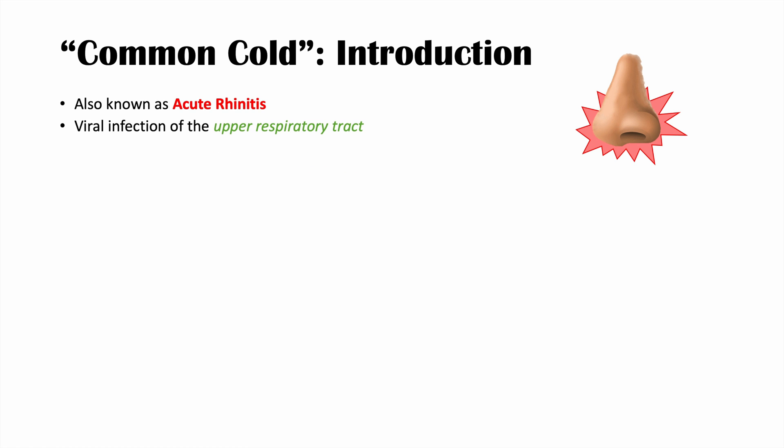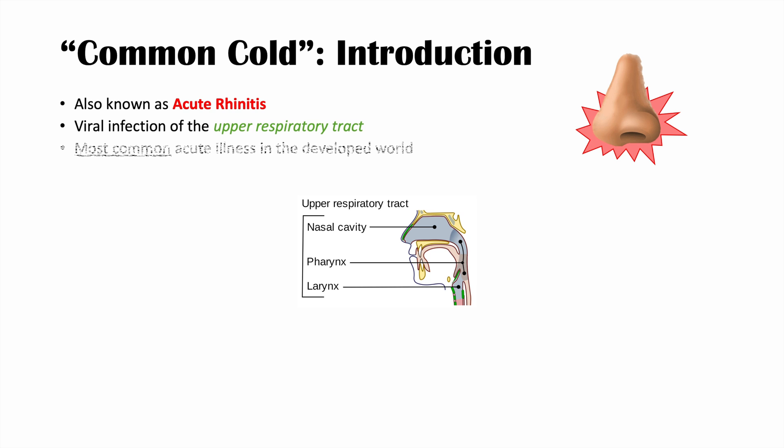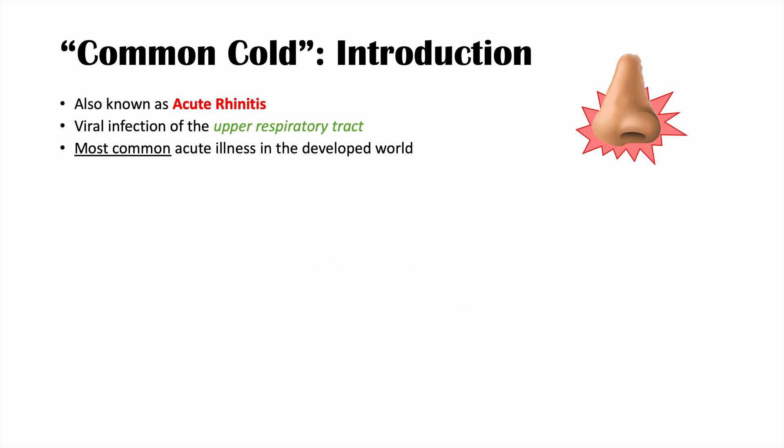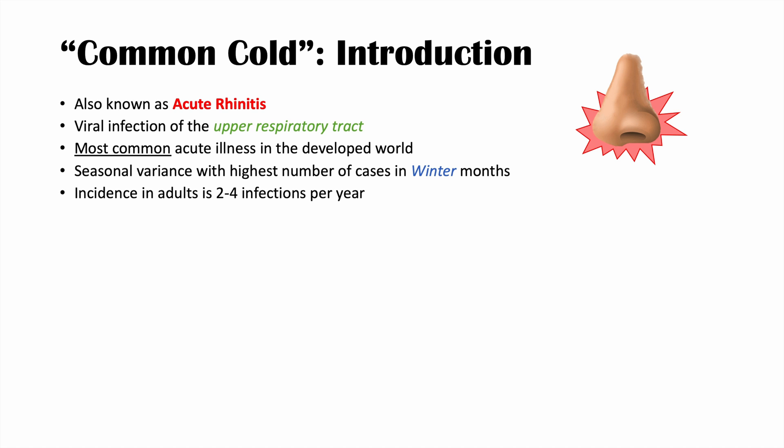Specifically, the common cold is a viral infection of the upper respiratory tract — the respiratory tract above the larynx. It is the most common acute illness in the developed world. There is a seasonal variance, with the highest number of cases in the winter months. An adult will typically get two to four common colds per year, whereas a child can get even more — six to eight per year.